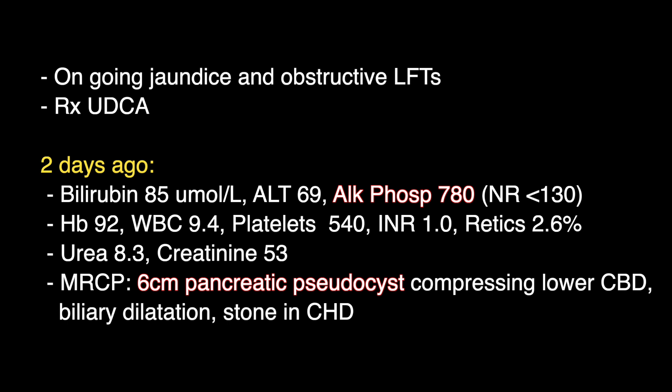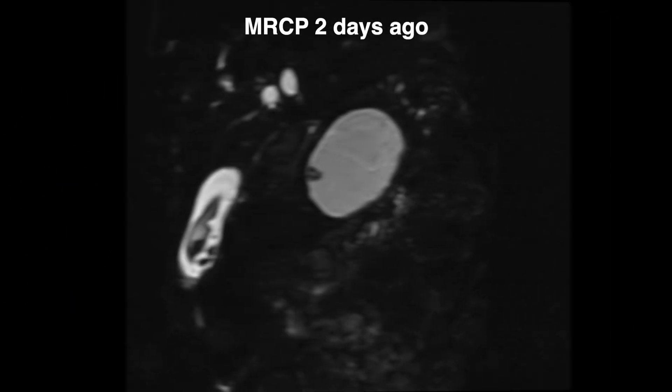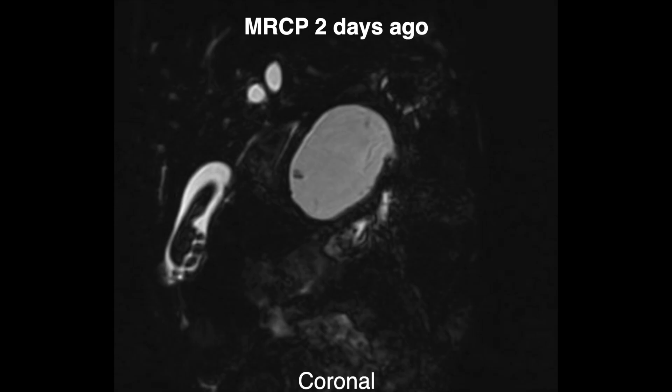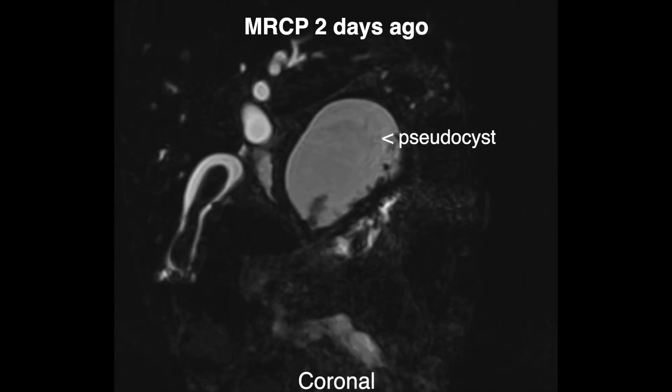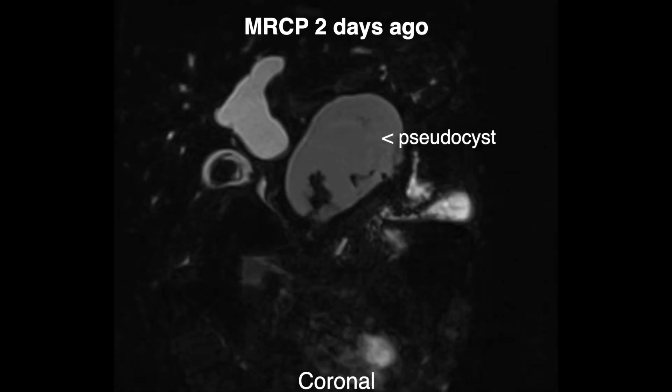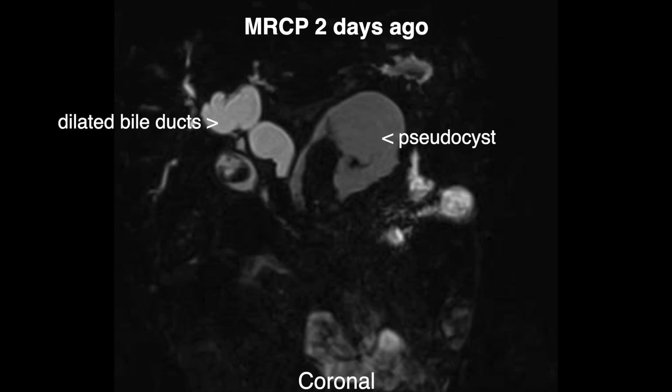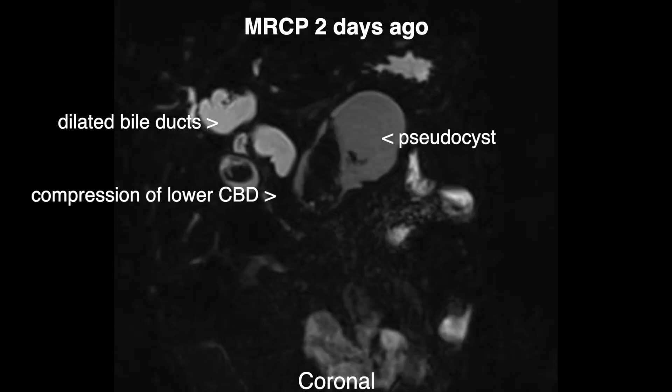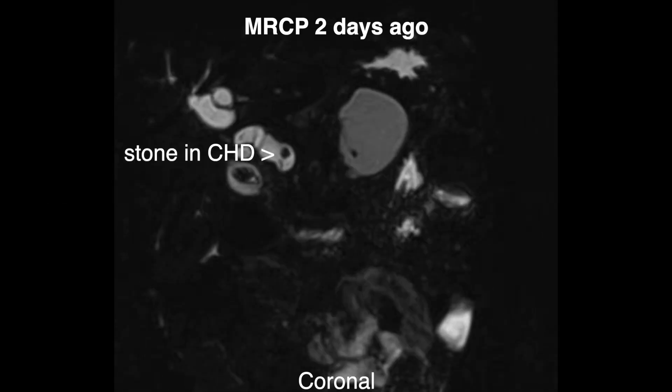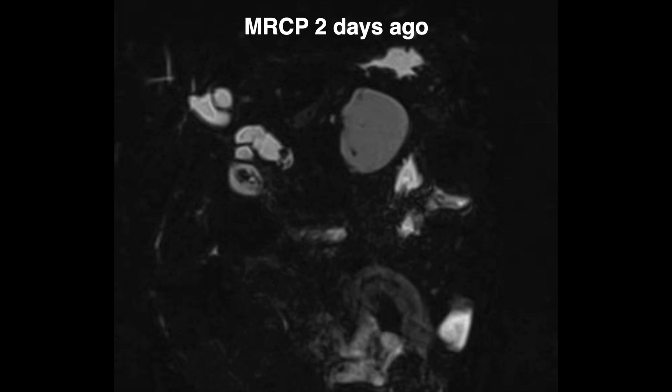The haemoglobin settled at 92 and the renal function returned to normal. An MRCP two days ago showed an ongoing pancreatic pseudocyst measuring 6 centimetres in diameter and compressing the lower bile duct. The coronal views clearly showed the large pancreatic pseudocyst compressing the lower common bile duct with dilated common hepatic duct and intrahepatic ducts above the compression.